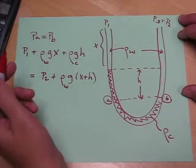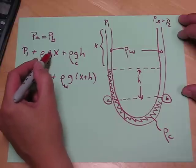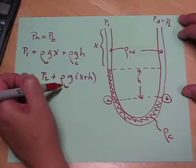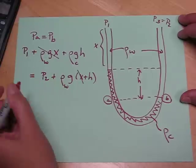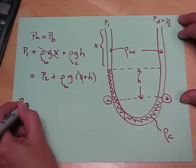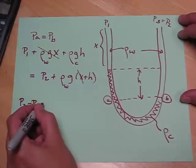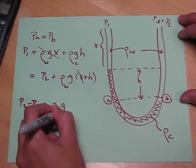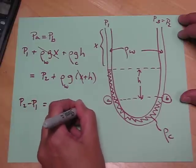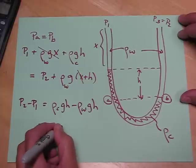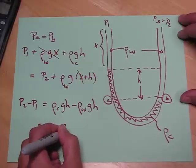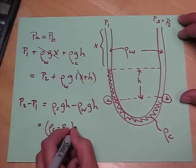Now we just need to do some algebra. On the left-hand side, we have rho water G x. On the right-hand side, we have rho water G x. So these cancel. And we get P2 minus P1 is equal to rho C g h minus rho w g h, or rho C minus rho w g h.